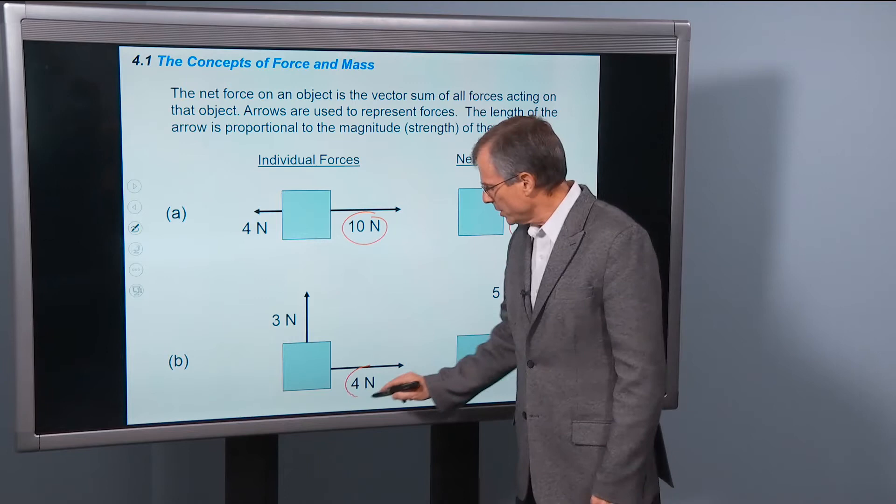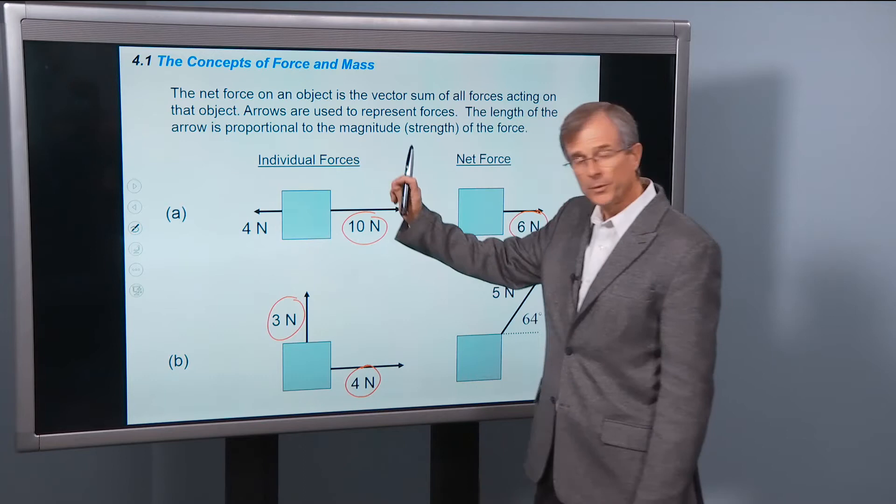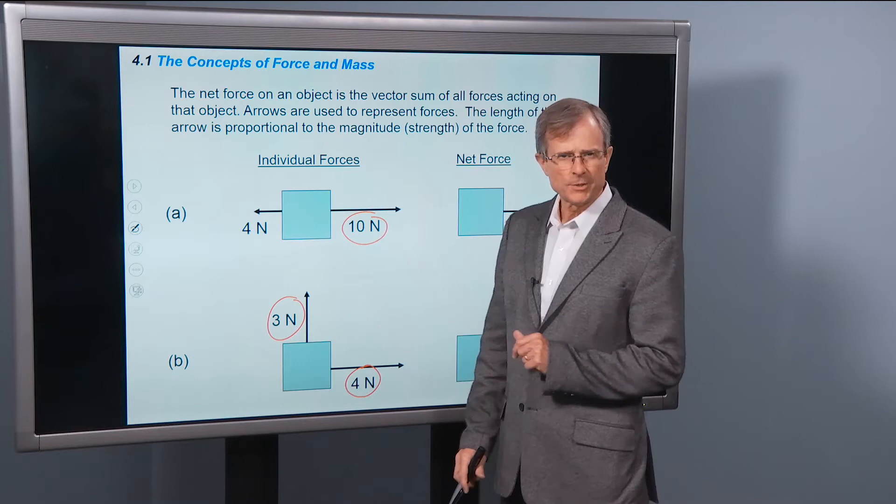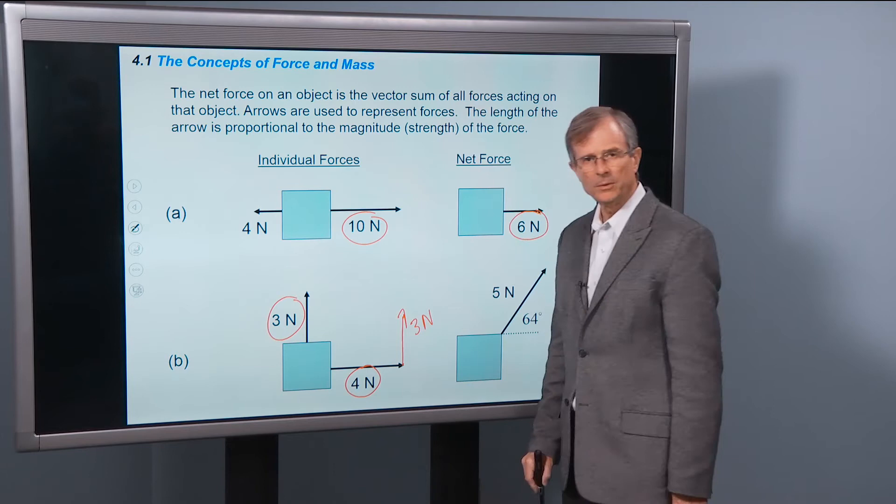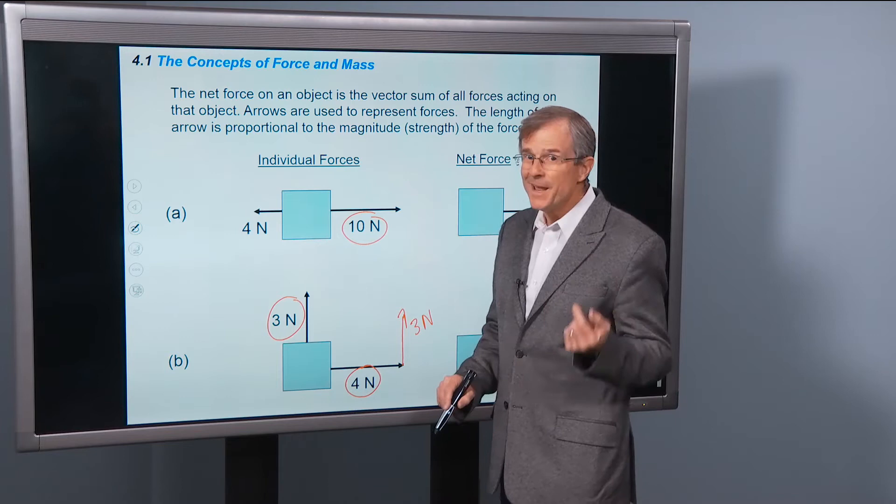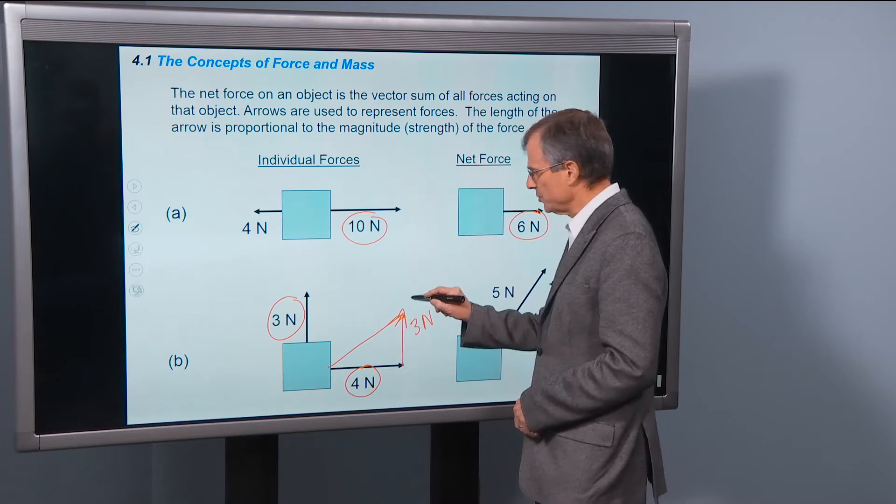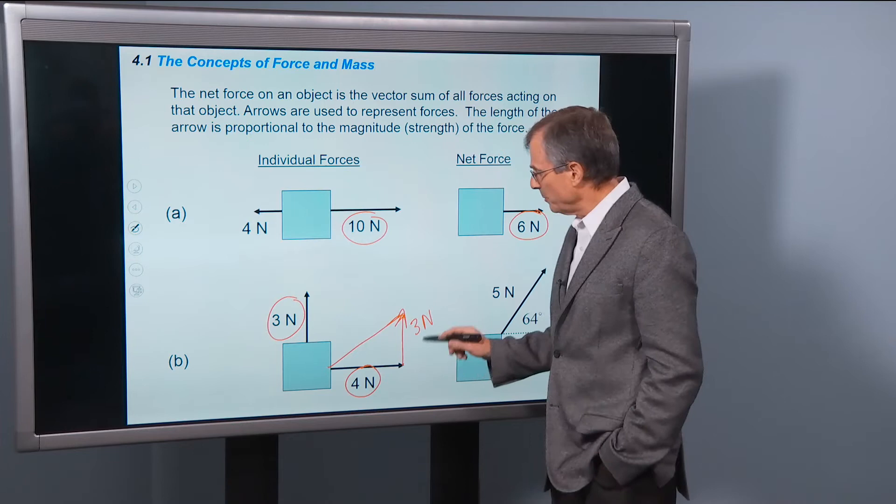What if you push to the right with 4N and you push up with 3N? What's the net force? Well, you've got to add these two vectors together. You put the tail of the second vector at the tip of the first vector. So here's another copy of that 3N force. And then you draw the resultant vector, or in this case, the net force from where you start in this journey to where you end, the straight line distance from where you start to where you end.